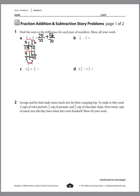So we're adding 25 plus 56, which gives us 81/70. Or you can also say that equals 1 whole and 11/70. Either of those answers work.